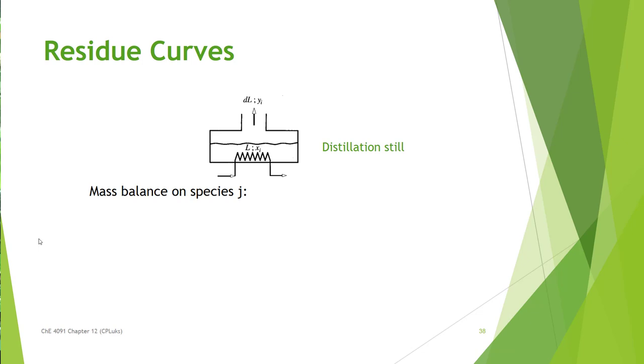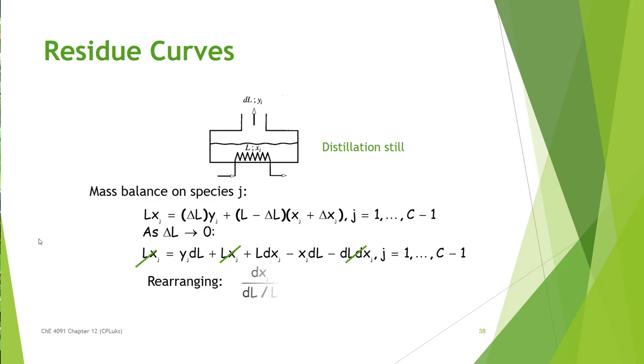Now, the way that we often describe these is using residue curves. Now, a residue curve officially is created by taking material and putting it in a distillation still and doing a batch distillation on that. So, if you do a material balance on this, you've got liquid in there, and then you have delta liquid that's leaving, moving into the vapor. And the compositions change. And so, when you do the material balance on these for each of your components, you end up with an expression that looks like this, which then can be written in this form here. So how X changes over the course of the distillation time is the difference between the X and the Y.